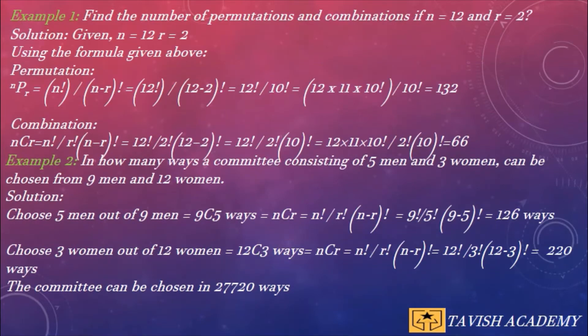Example 1: Find the number of permutations and combinations if n = 12 and r = 2. Solution: Given n = 12 and r = 2. Now the formula